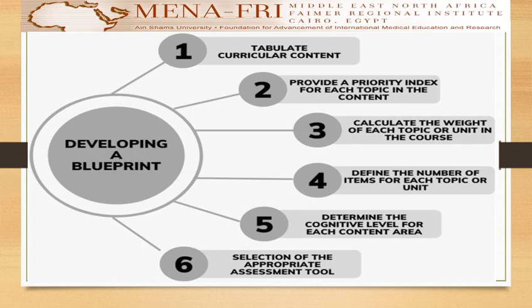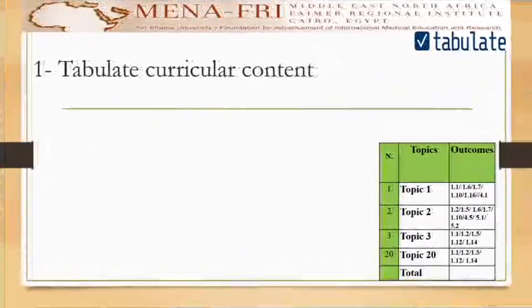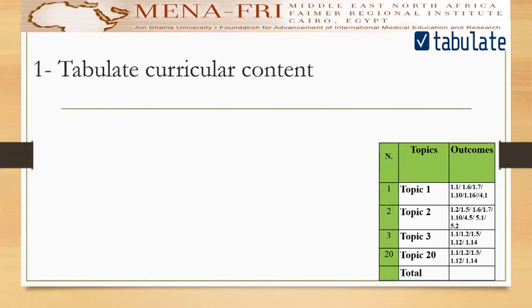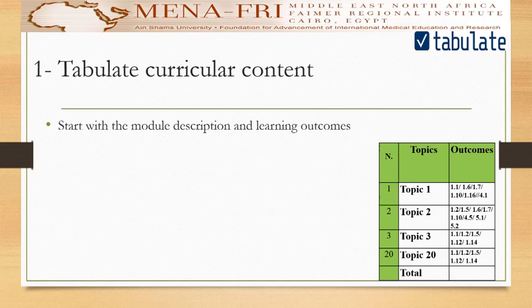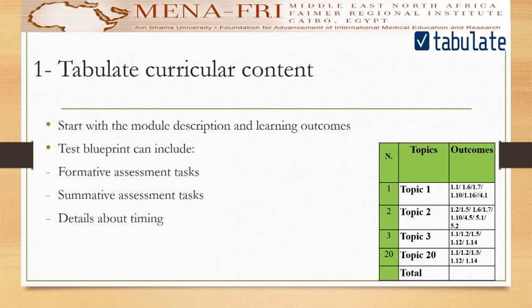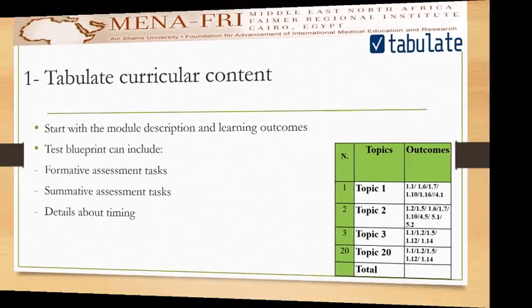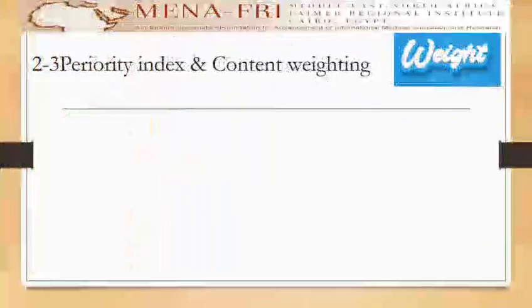First, we are going to see how to tabulate a curricular content. Start with the module description and learning outcomes. Test blueprints can include formative assessment tasks, summative assessment tasks, and detail about timing.